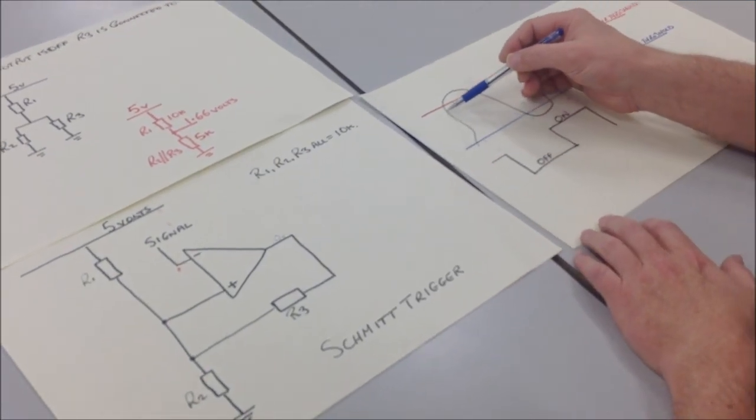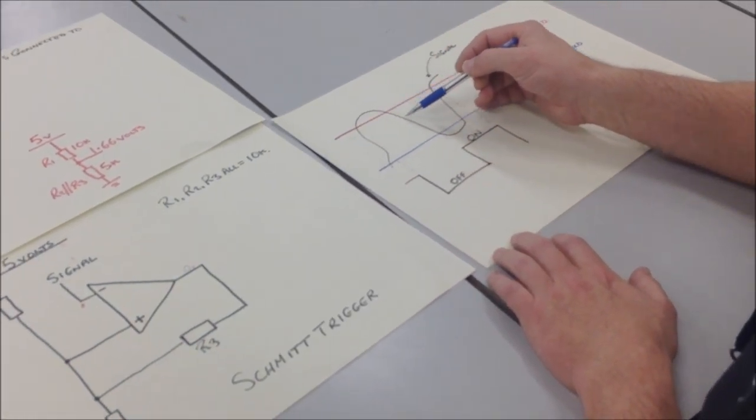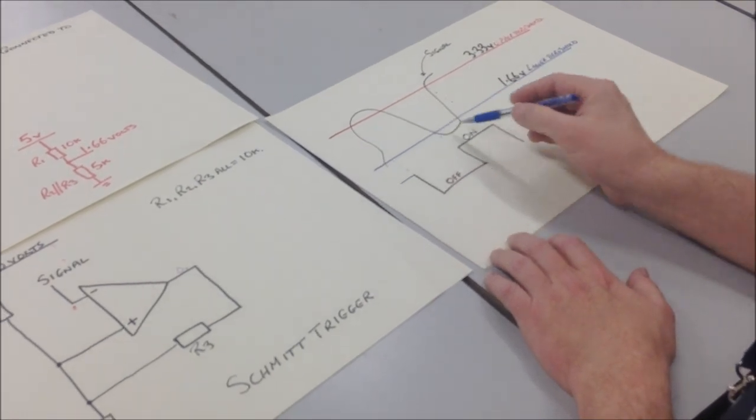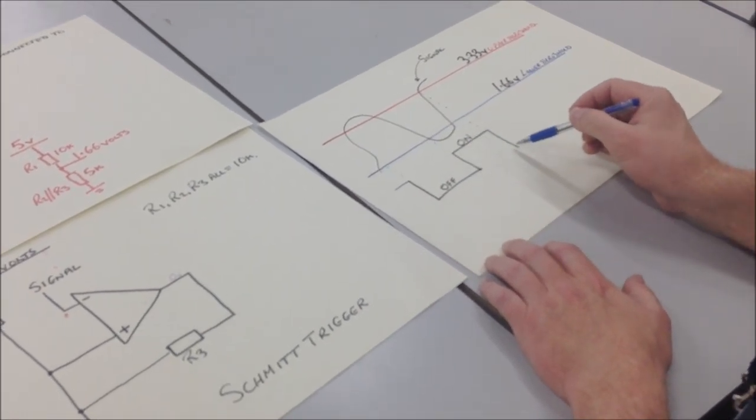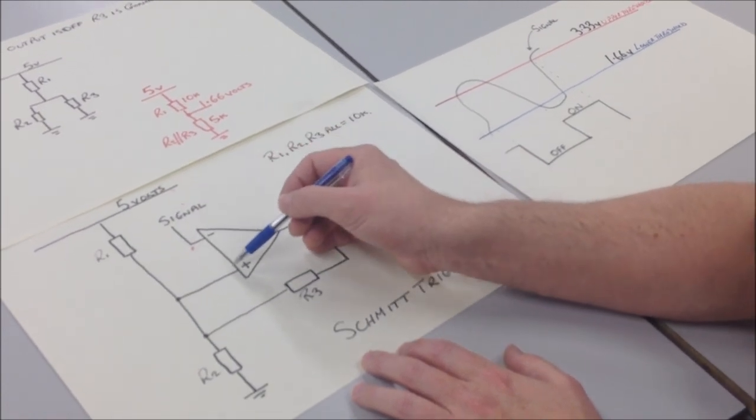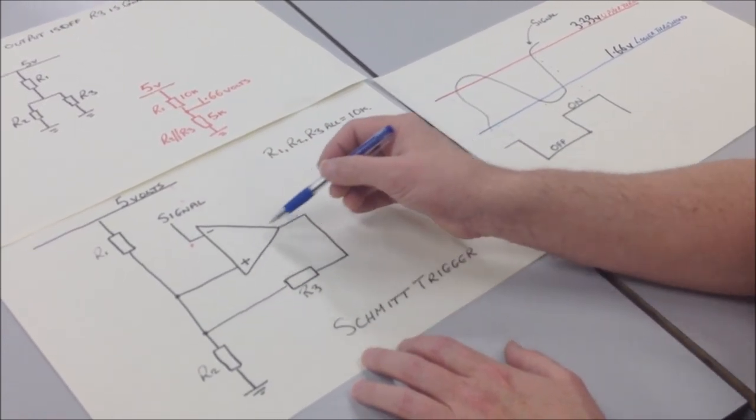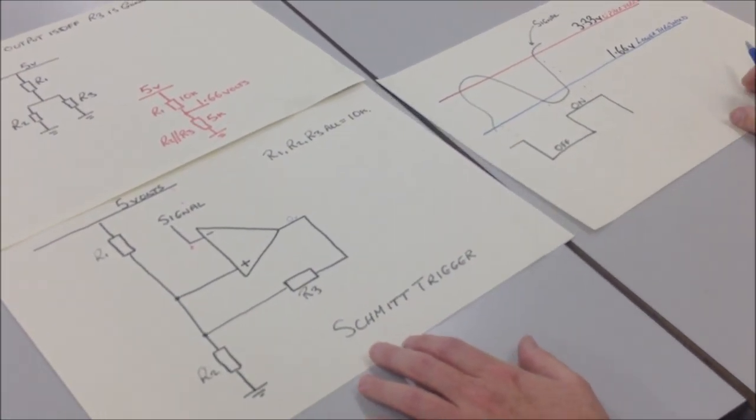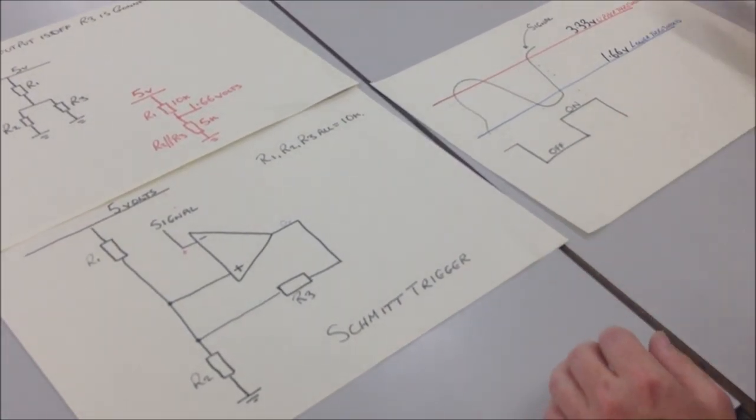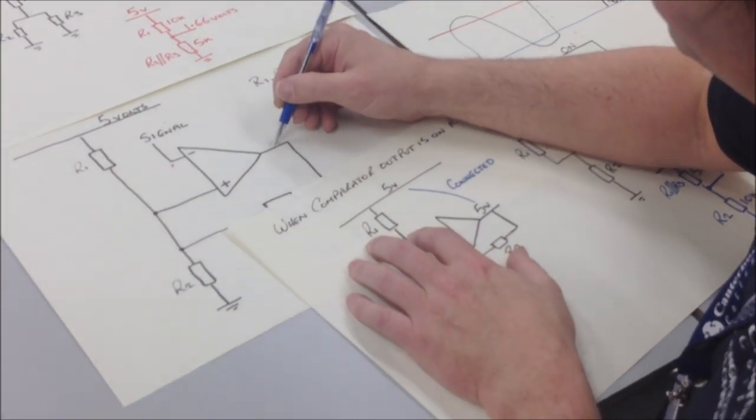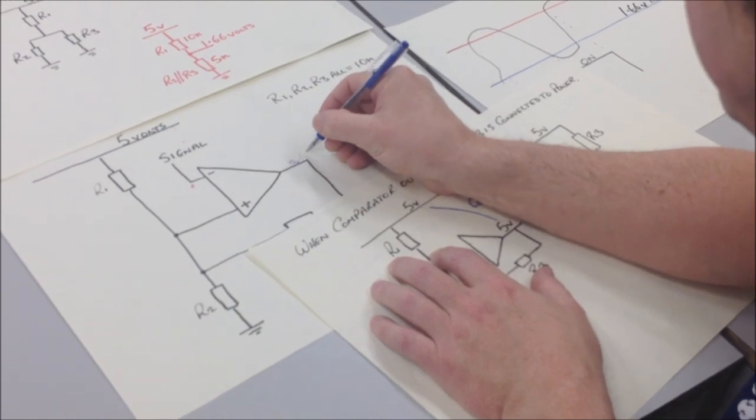The signal needs to travel or fall to 1.66 volts before the comparator can switch on again. When that happens, this signal falls below the value of the threshold voltage, the comparator switches on. When the comparator switches on, this becomes 5 volts here.